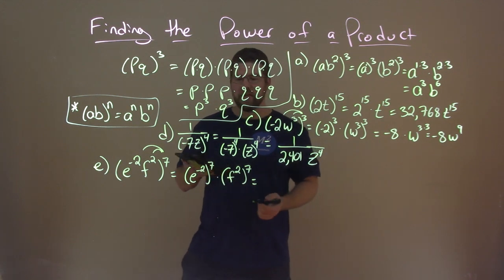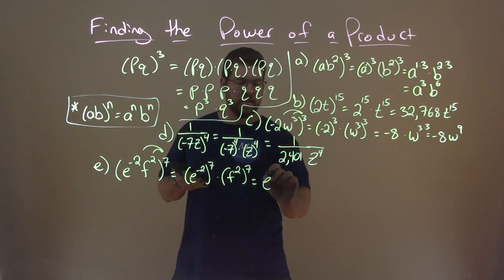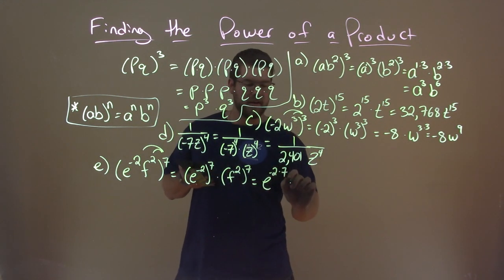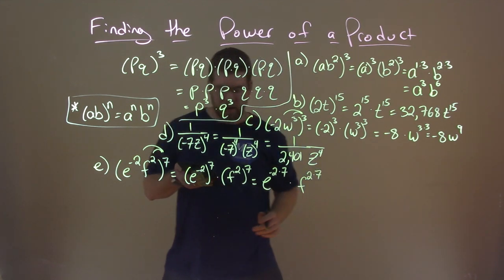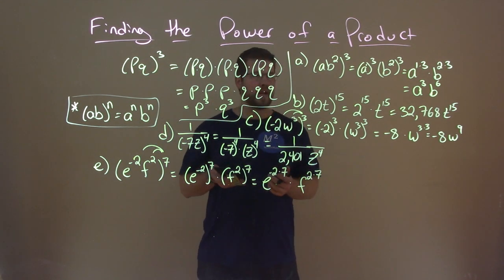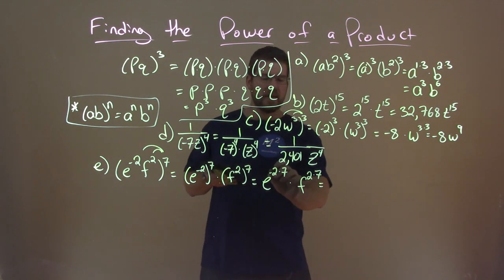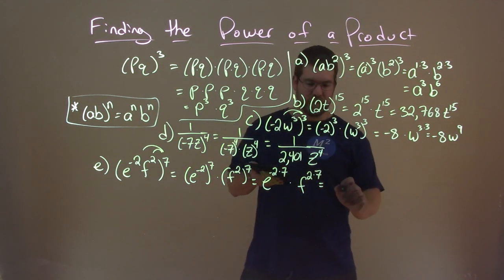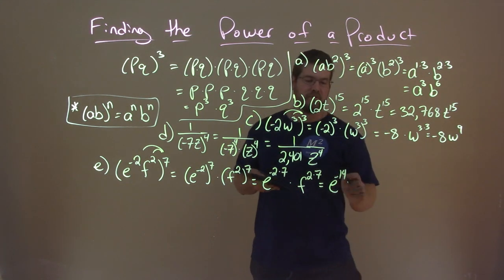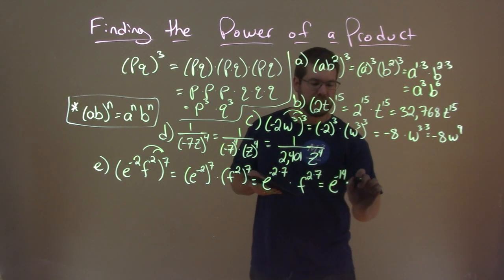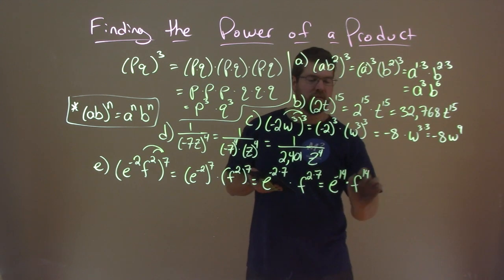So, keep simplifying. We multiply our exponents. So, that's e to the negative 2 times 7 times f to the 2 times 7. Now, notice we're probably going to have a negative exponent here. Negative 2 times 7 is a negative 14. So, we have e to the negative 14. And positive 2 times positive 7 is a positive 14. And that's f to the positive 14 power.